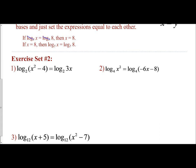If I start off with log base 2 of (x squared minus 4) equals log base 2 of 3x, I notice I have one log on the left, one log on the right, and it's the same base. So I can go ahead and cross them out and focus on the fact that the expressions must be equal to each other: x squared minus 4 equals 3x. Since this is a quadratic, I'm going to subtract 3x and put it in standard form: x squared minus 3x minus 4 equals 0.